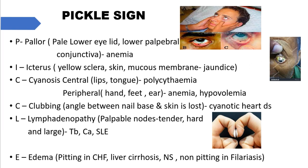For icterus, you observe the upper conjunctiva for yellowish discoloration. Next, C is for cyanosis — bluish discoloration — which can be central or peripheral. Central cyanosis is observed in the lips and tongue, and can occur in polycythemia. Peripheral cyanosis is observed on the hands, feet, and ear lobes, and can be found in anemia and hypovolemia.